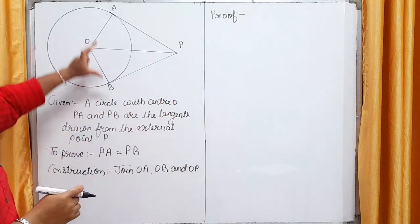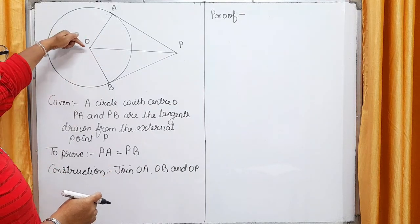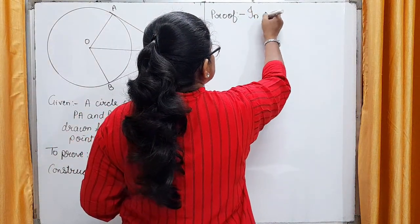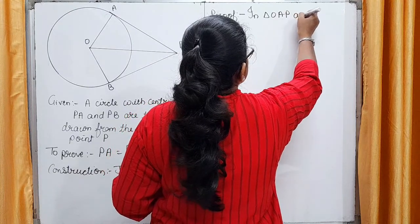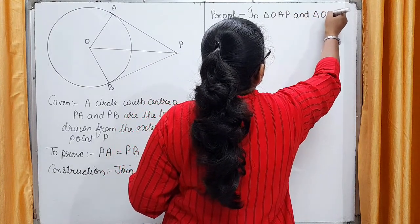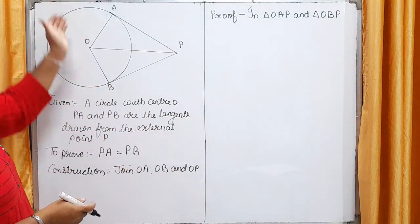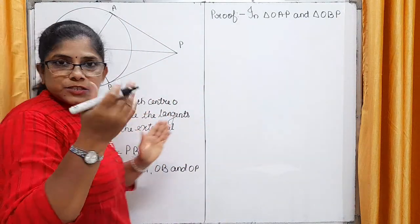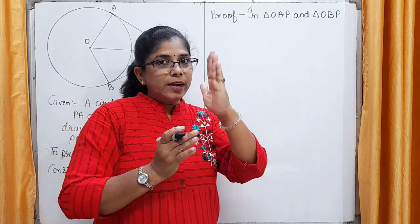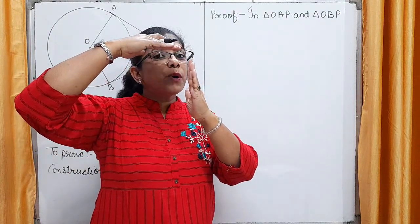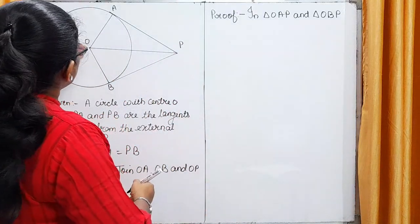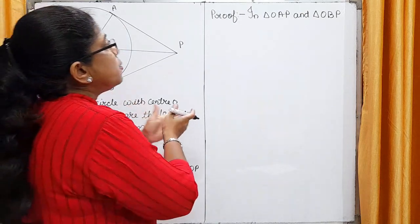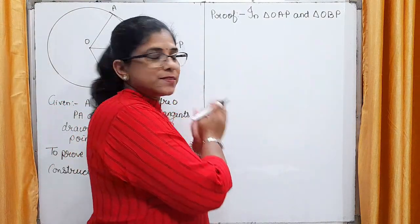Here, we will consider these two triangles. Triangle OAP and OBP. In triangle OAP and OBP. Now, here OA and OB are radii of this circle. PA and PB are tangents. Now, we know that radii and tangent are always perpendicular to each other. So, here OA is perpendicular to PA and OB is perpendicular to PB. Perpendicular means the measure of angle is 90 degrees. Let's write this.